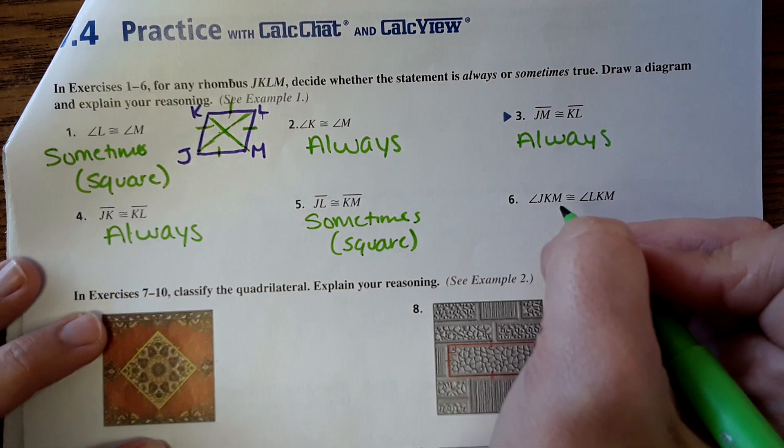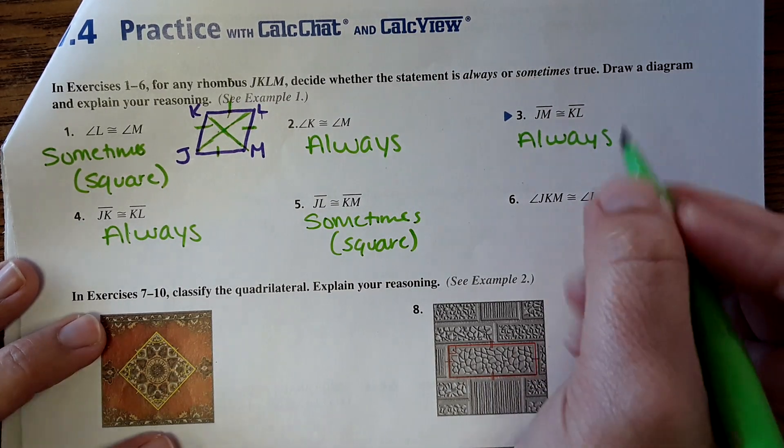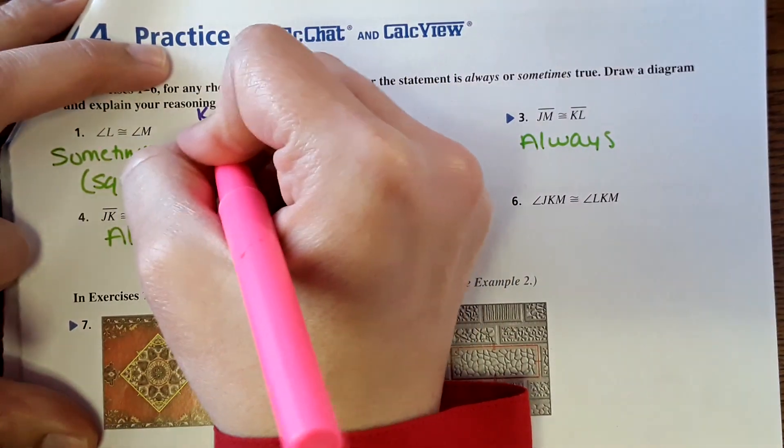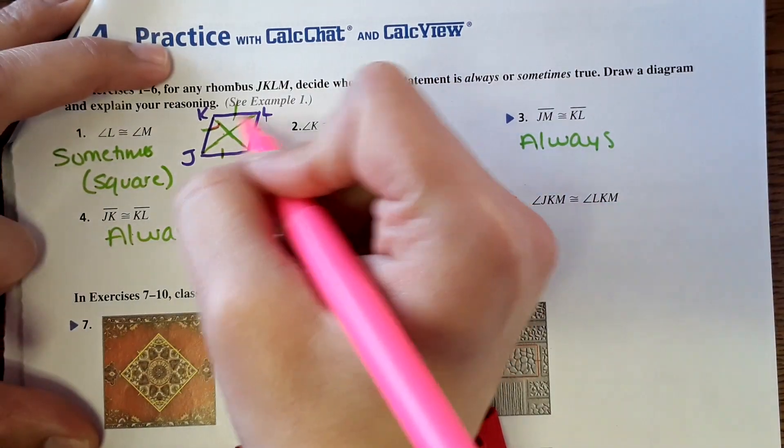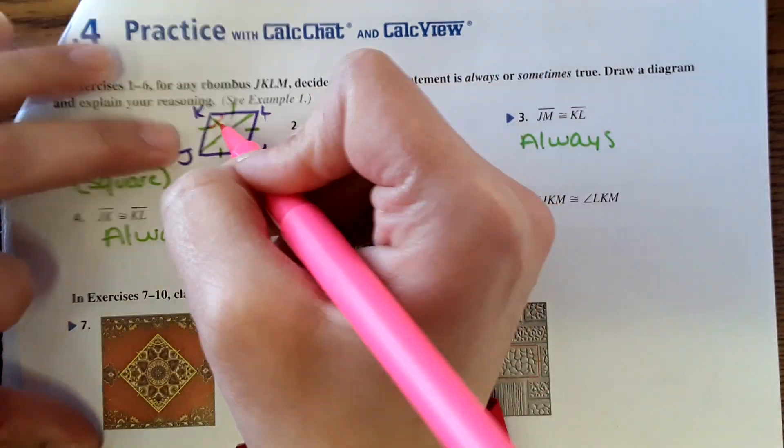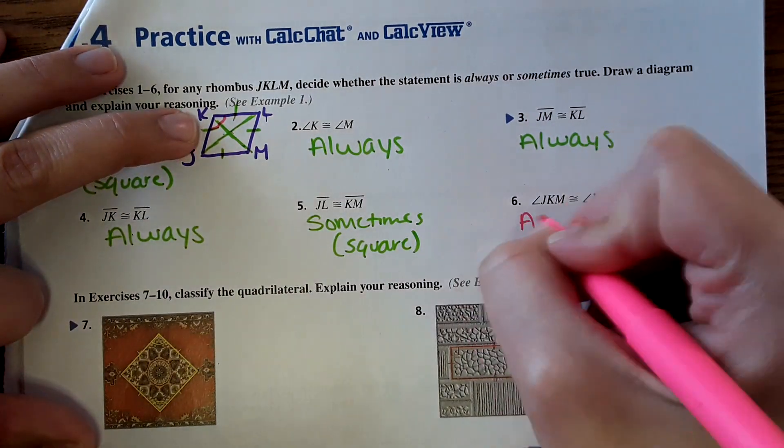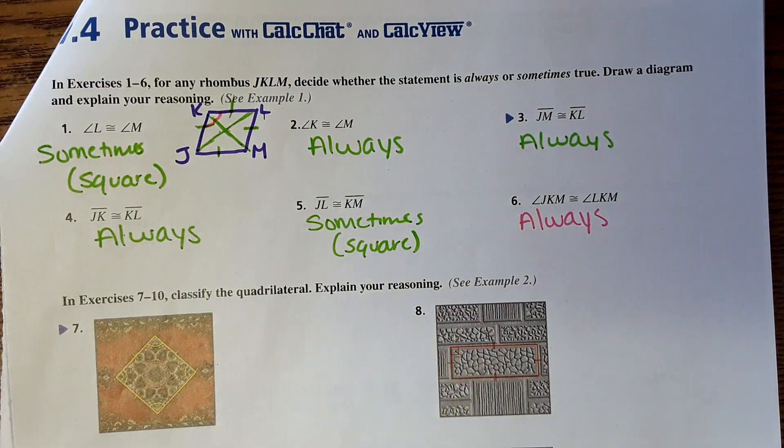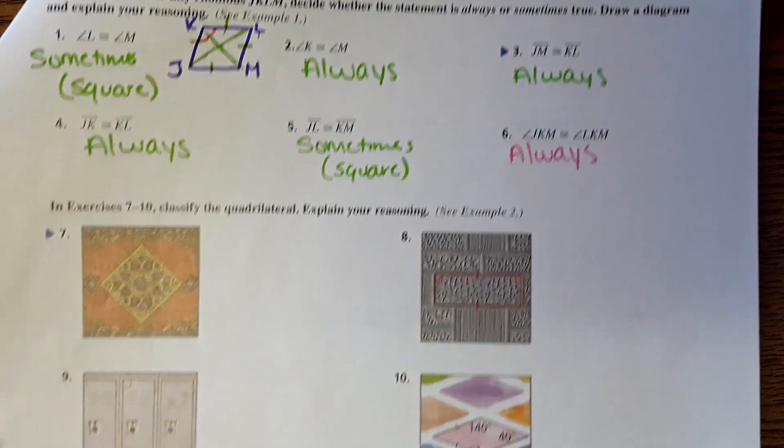And then angle JKM. So angle JKM. What would that be? JKM is right here. And angle LKM. Are those equal? Yes, because the diagonals bisect the angle. So always.